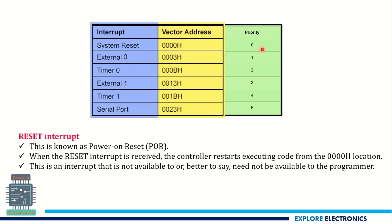The priorities are assigned with numbers. External interrupt 0 has the highest priority and serial port has the lowest priority. The recommended order to remember is: INT0, Timer 0, INT1, Timer overflow 1, then serial port interrupt. So the highest priority is given to INT0 and the lowest to the serial port, though we can change these priorities using the interrupt priority register.